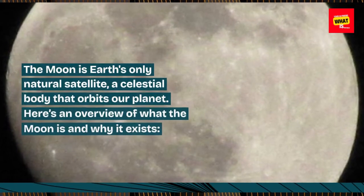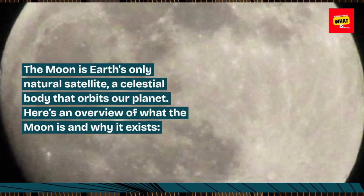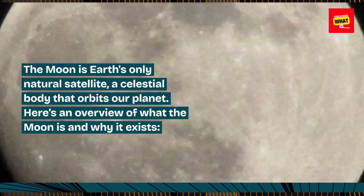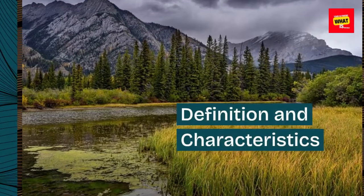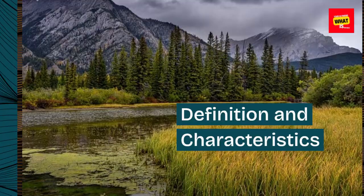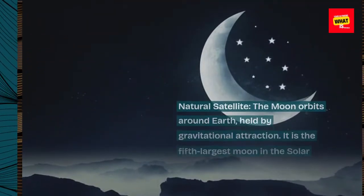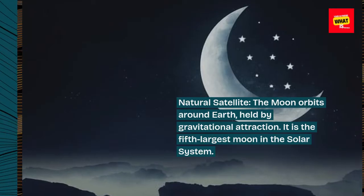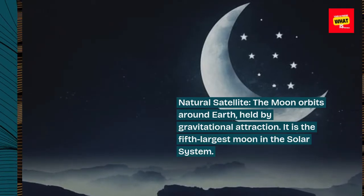The Moon is Earth's only natural satellite, a celestial body that orbits our planet. Here's an overview of what the Moon is and why it exists. The Moon orbits around Earth, held by gravitational attraction. It is the fifth largest moon in the Solar System.